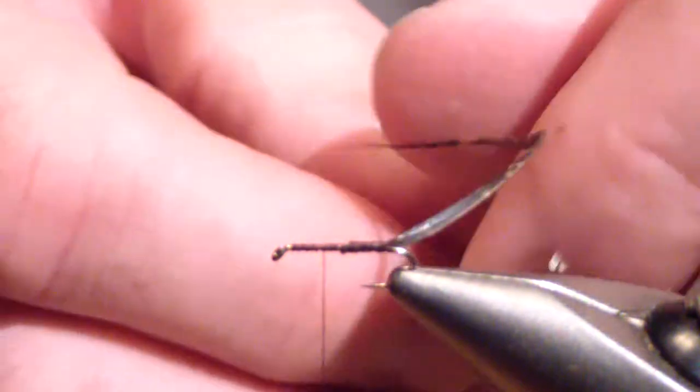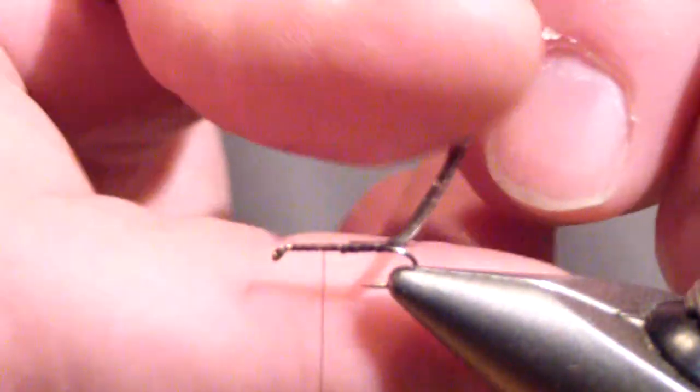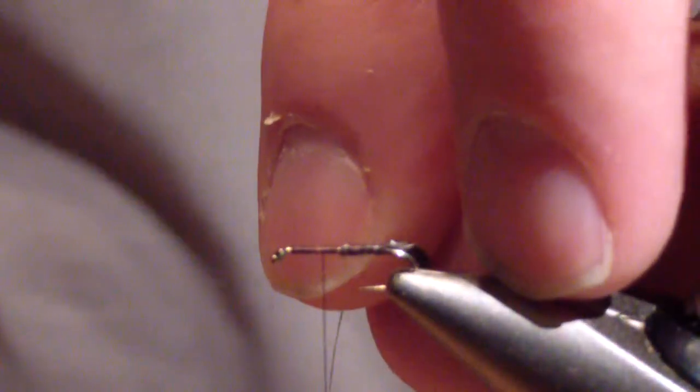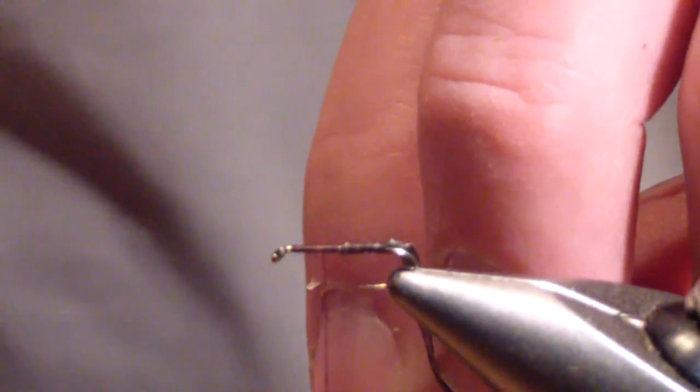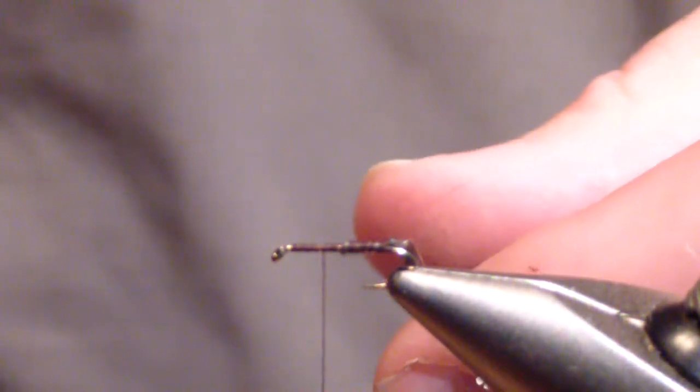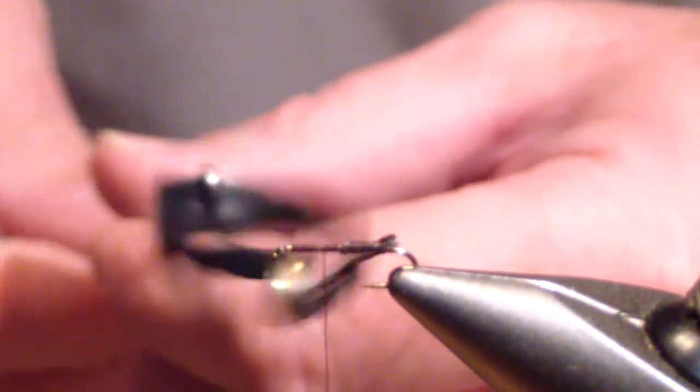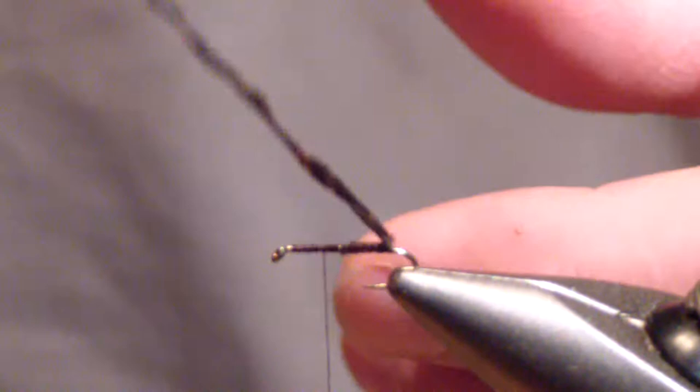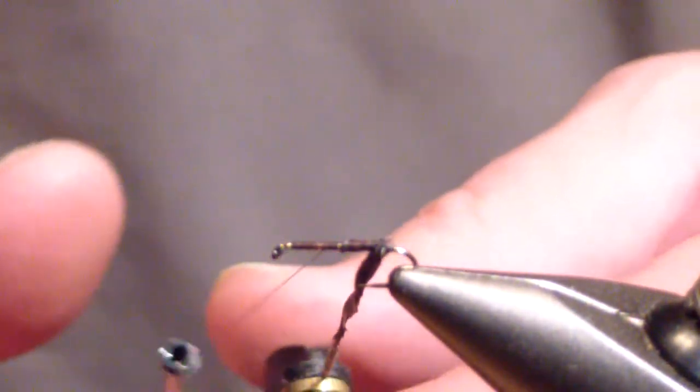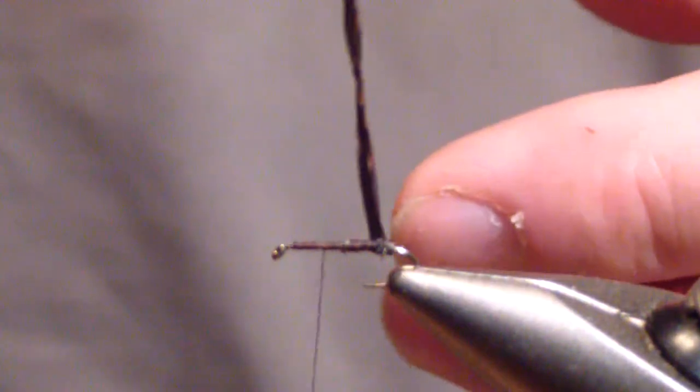Then you're going to sweep your thread and your fibers together. I use hackle pliers and a shepherd's hook to spin this, as many of you have probably seen. If you have a dubbing tool, by all means use it. This is my preferred method. I learned with this exact hackle plier and that shepherd's hook, so I've stuck with it. It works for me.